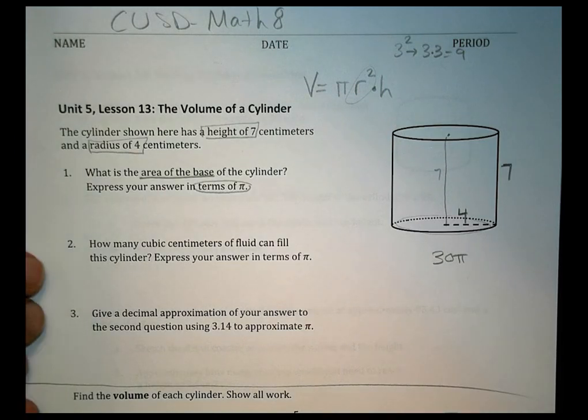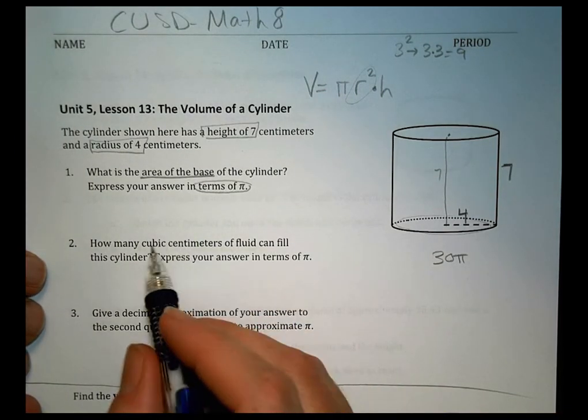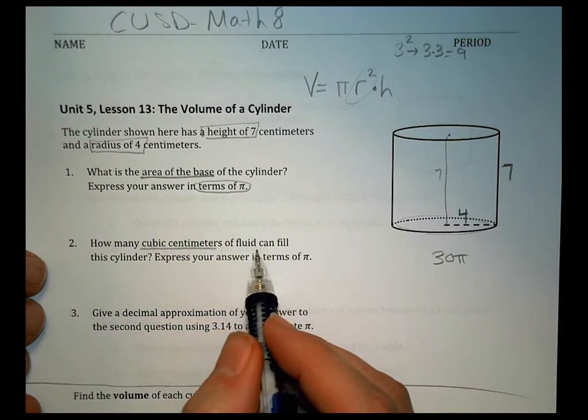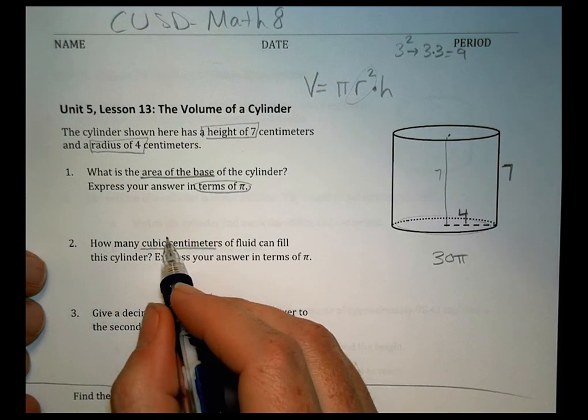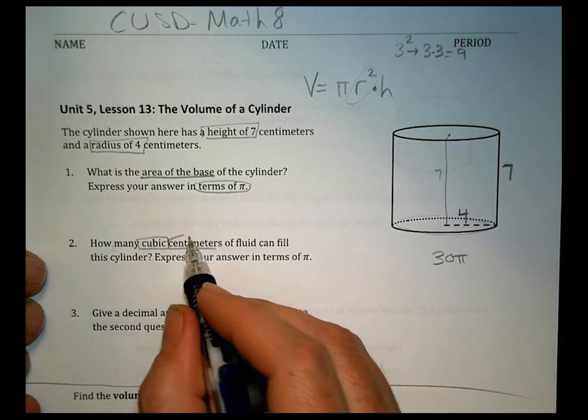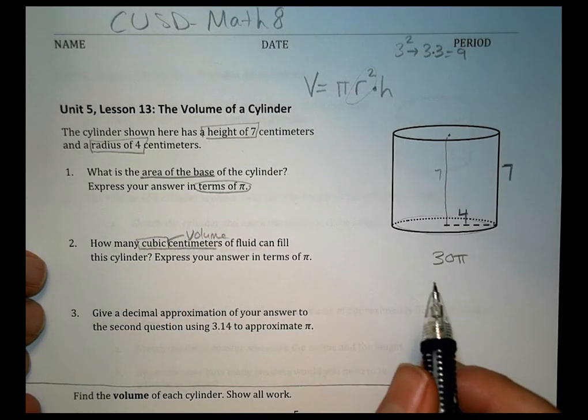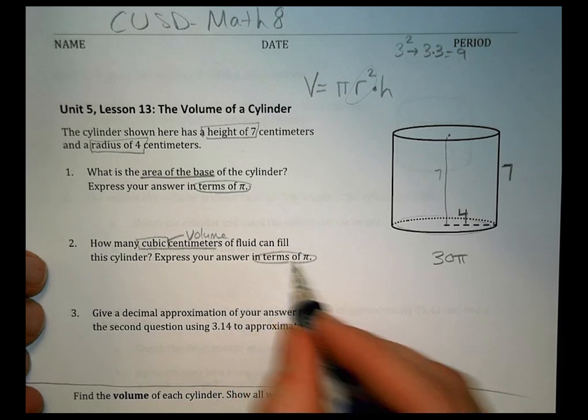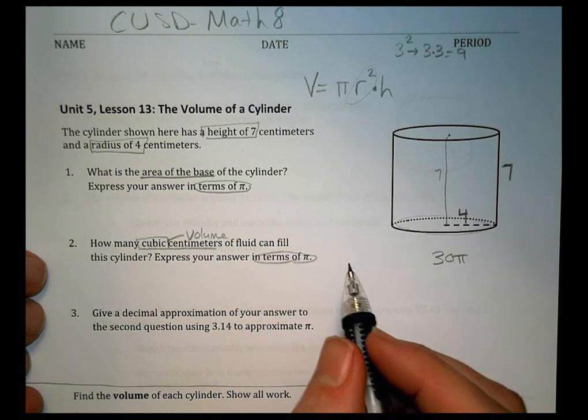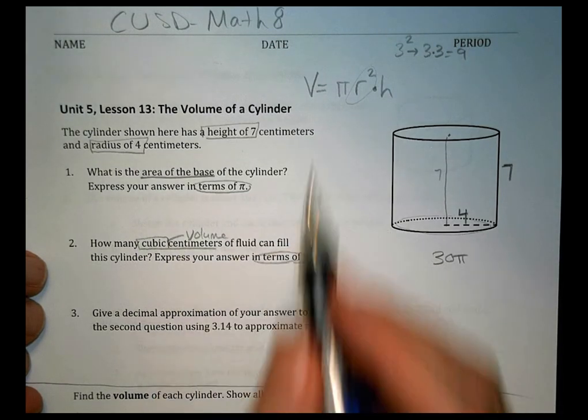For number 2, it wants to know how many cubic centimeters of fluid can fill the cylinder. When we're talking about cubic things, we're trying to decide what is the volume, because the volume is cubic, and again leave this in terms of pi. So that's where we're going to be finding the volume.